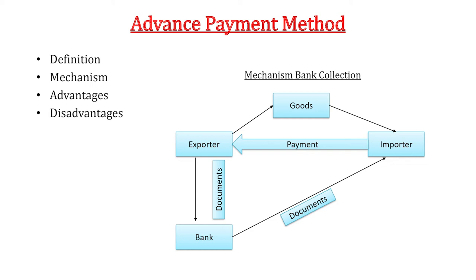Normally, advance payment is used by the exporter to manufacture the goods. The bank will send goods to the exporter, and the exporter will give the documents to the bank, which will send them directly to the importer — because there is no risk at all for the exporter. In this mechanism, the exporter gets maximum benefit while the importer takes very high risk. Before giving advance payment, the importer will check the credentials of the exporter.